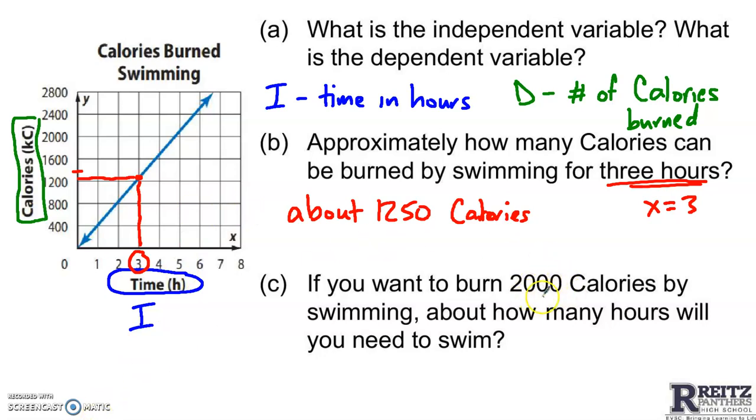Now C says, if you want to burn 2,000 calories by swimming, or in other words if y is 2,000, about how many hours will you need to swim? So we're talking about 2,000 calories, right about there. I really think the best answer here is somewhere between 4 and 5. To me it even looks like it's a little bit more than 4 and a half, maybe 4.75 hours. Would we accept 4 and a half? We absolutely would. Make sure you can justify it and talk about the point you saw on the graph that answered the question.